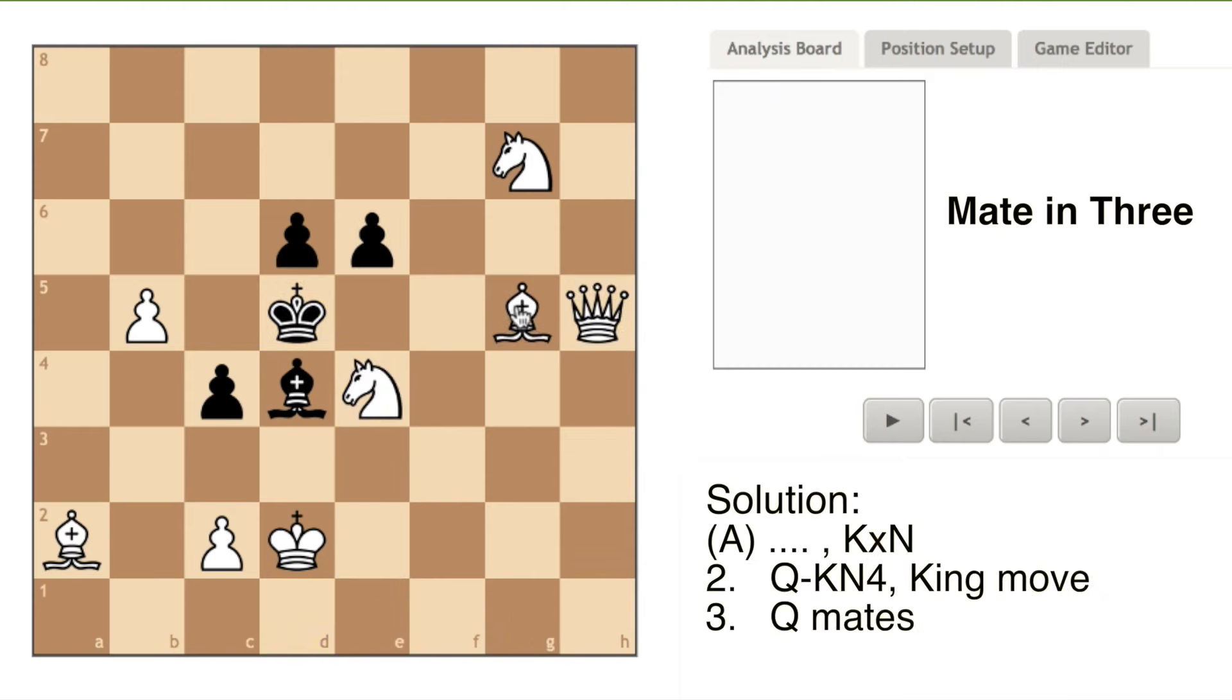The second option for black after white makes the initial move of bishop to king three is to capture the knight at king five with its king. White answers with queen to king knight four, putting black in check.